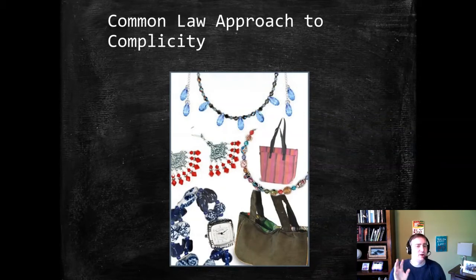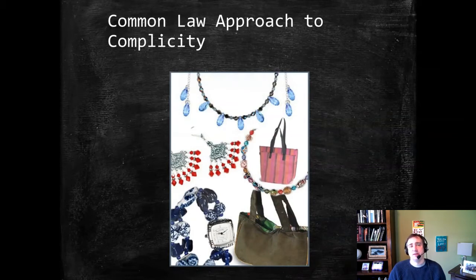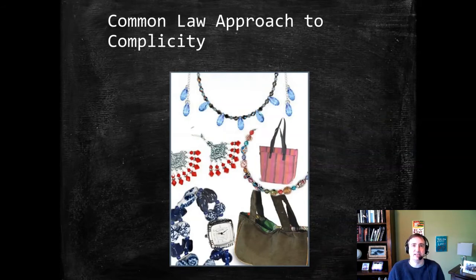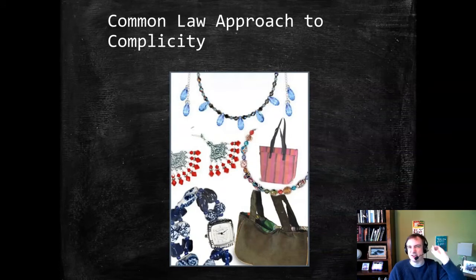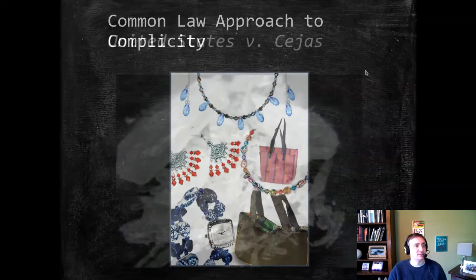I want to take a step back and distinguish something called an accessory that is not really an accessory in terms of accomplice liability — and that's what we call accessories after the fact. Accessories after the fact are typically people that harbor fugitives or aid their escape in some way. It's better to think of accessories after the fact as just a separate crime — we could call it harboring a fugitive. Even if somebody is a so-called accessory after the fact, meaning they harbor a fugitive, it doesn't mean they become liable for all the prior crimes they did not aid and abet.